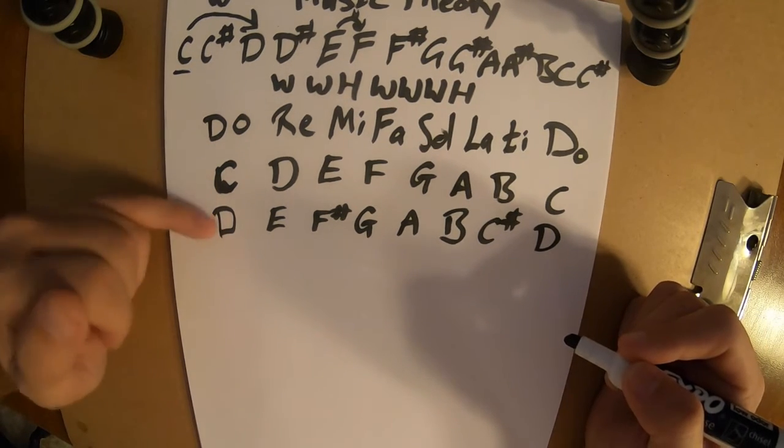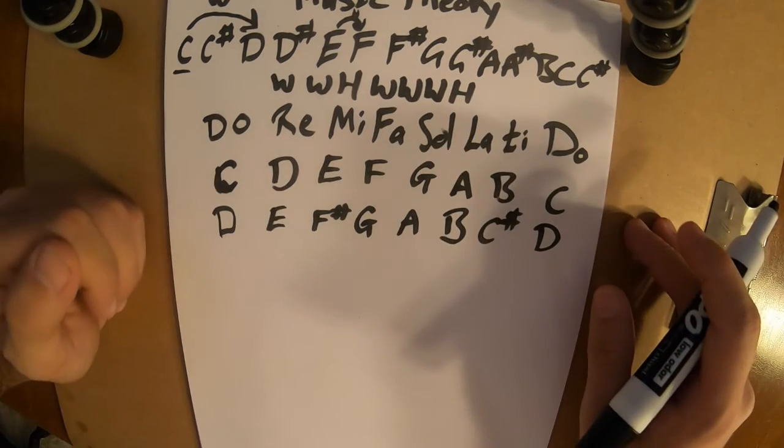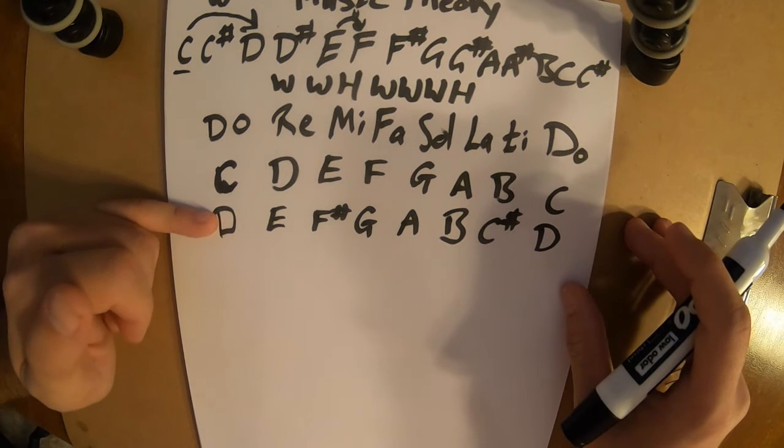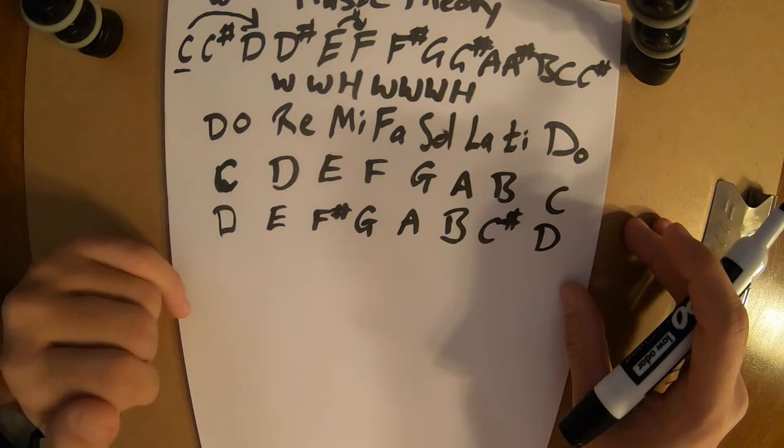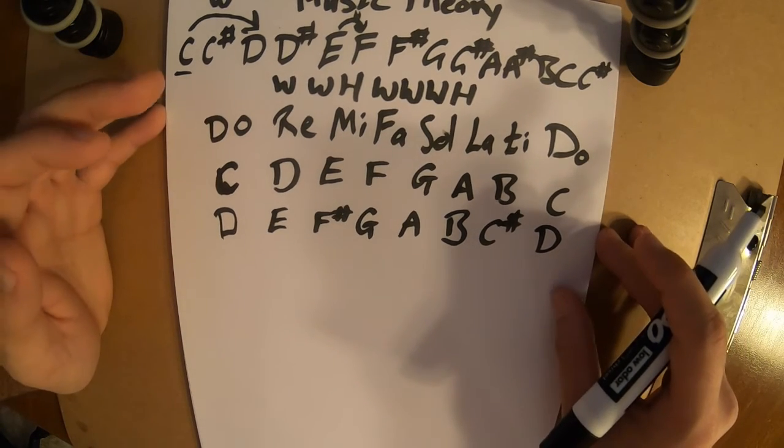So that would be our D scale. These two sound very similar. They sound basically the same. But the difference is that this one starts on C. This one starts on D. They're two different keys. But they end up kind of sounding the same.